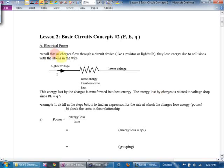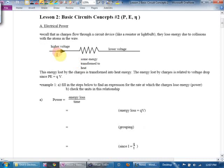It says, recall that as charges flow through a circuit device like a resistor or a light bulb, they lose energy due to collisions with atoms in the wire. So if we have a current moving to the right in this piece of wire and they're at a higher voltage, which means because voltage is energy per coulomb, each charge has more energy.